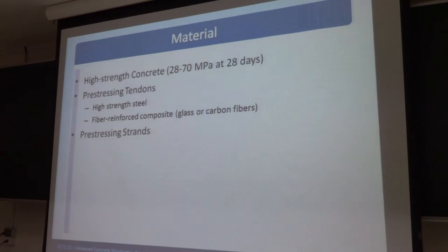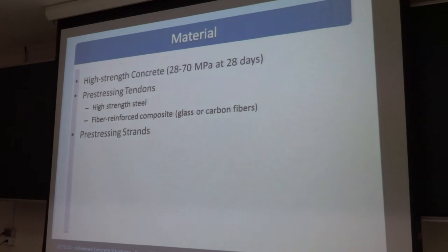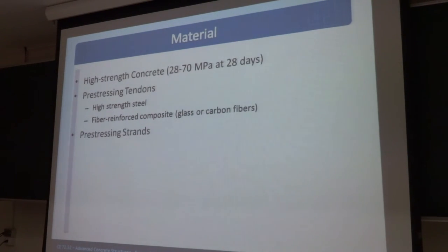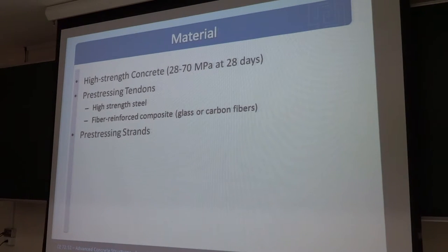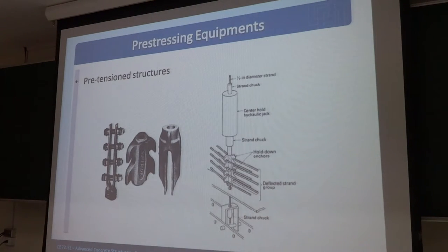Normally for prestressed concrete members, we use high-strength concrete and high-strength steel. Sometimes we use fiber-reinforced concrete and prestressing tendons. The yield strength is 1,700 MPa, while normal steel is about 440 MPa. These are the post-tension equipment that we use.